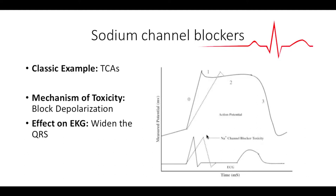So these are your sodium channel blockers. In your action potential, you have rapid depolarization, and that's what gives you your short and narrow QRS complex. What happens with the sodium channel blockers, with the TCAs, is they're blocking that rapid depolarization. Having some of those channels blocked causes a much slower depolarization. When you look at your actual EKG, you'll find that that short QRS is now a little bit wider. So that's why you get widening of your QRS.